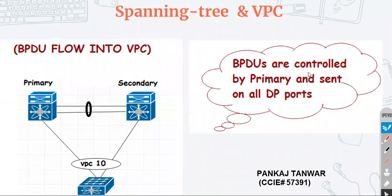In VPC there is a feature we can use — the VPC peer switch feature. When we use the VPC peer switch feature, both the VPC primary and secondary devices are going to use a single MAC address. In that case, your downstream device is not going to find out any difference.